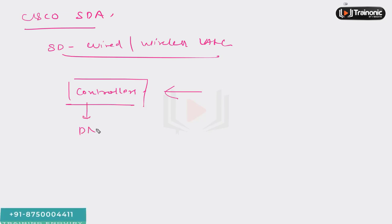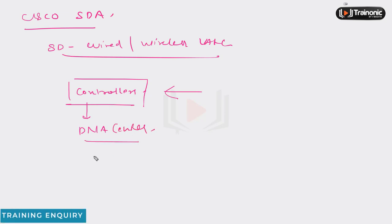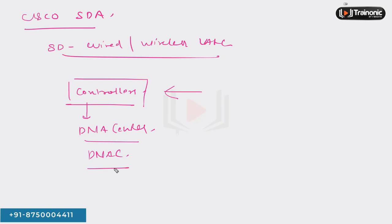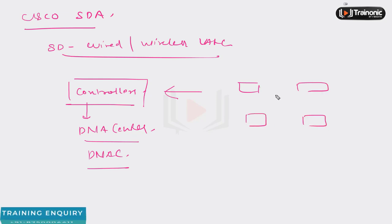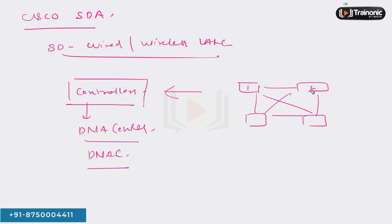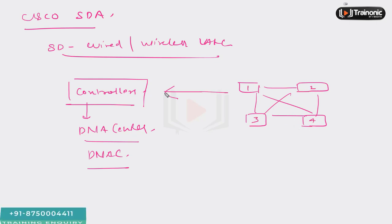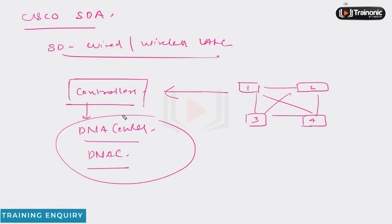This controller is in fact the DNA Center controller, or in short we call it DNAC. There is still going to be some sort of physical network based on routers and different devices, but these physical devices are going to be managed with the help of this centralized controller called DNA Center used in our LAN environment.